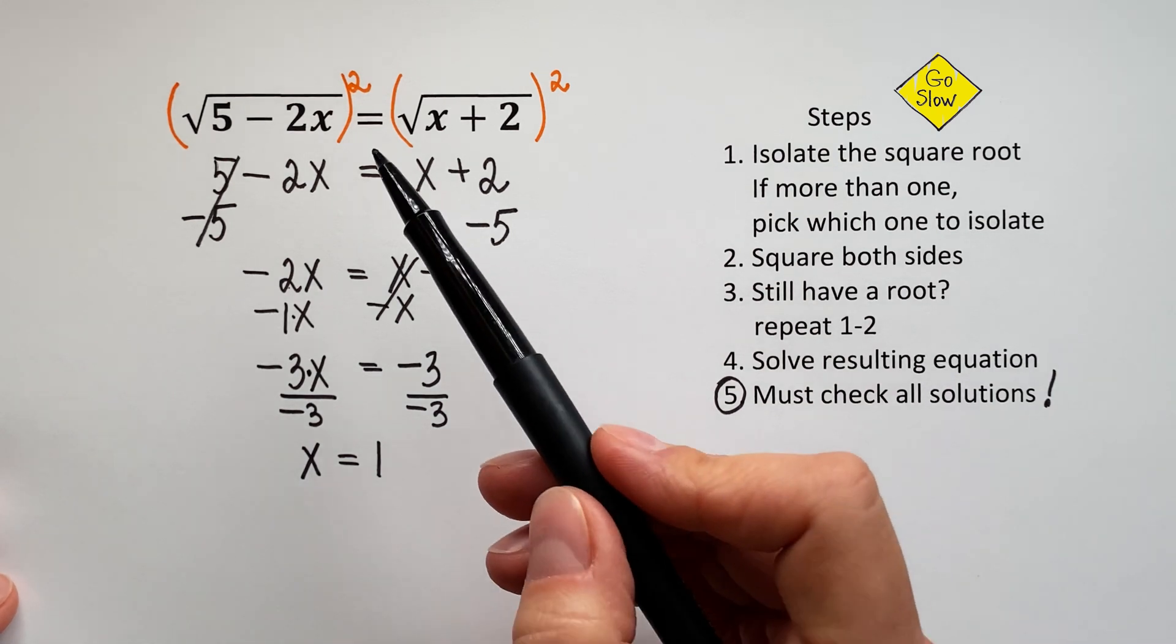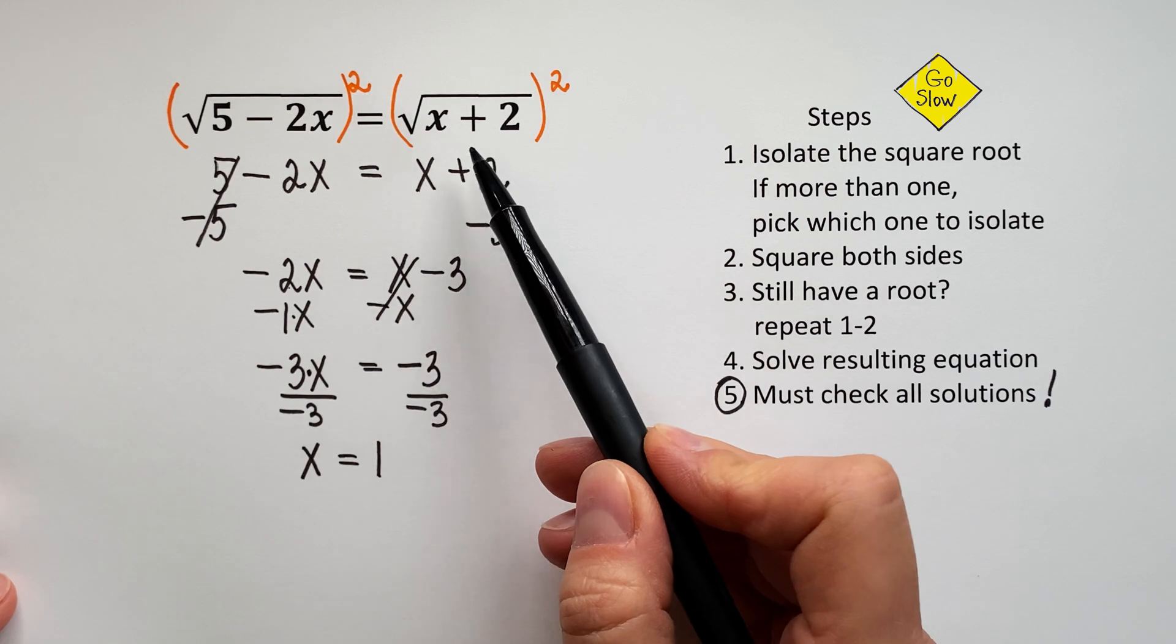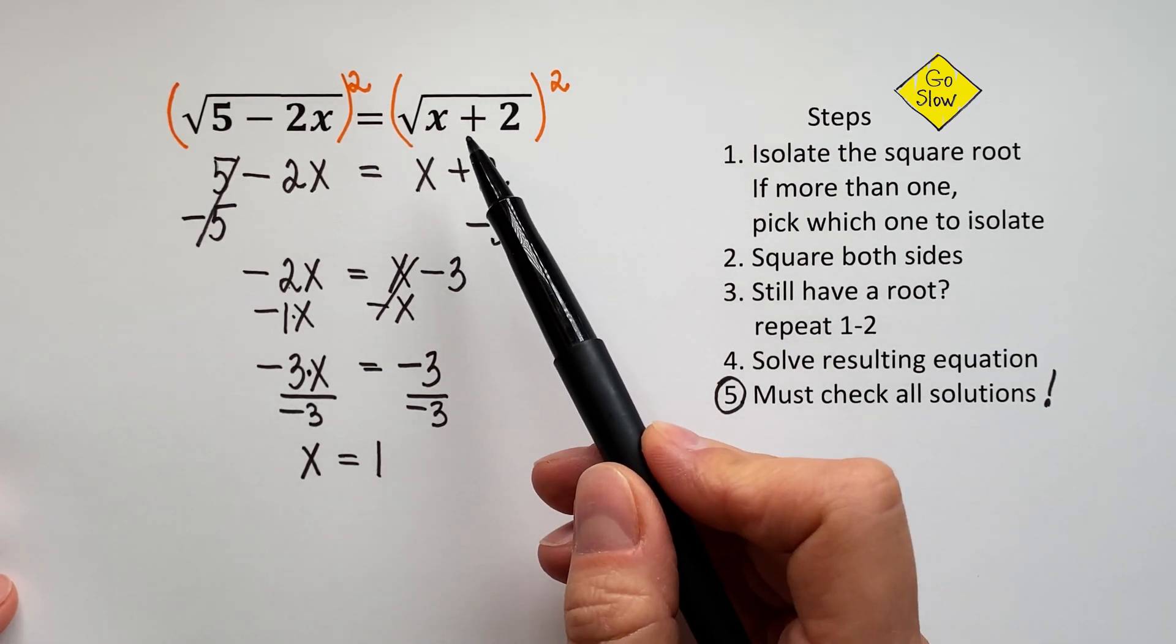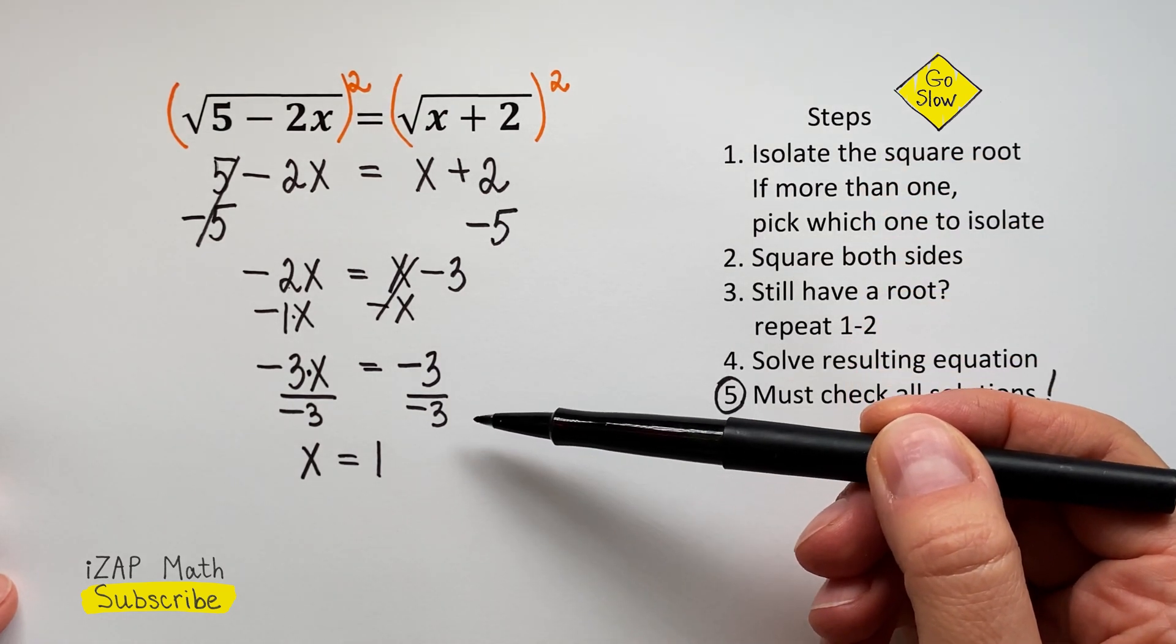Because the method of squaring both sides may produce extraneous solutions, may produce solutions that do not check out. Even if you didn't do anything wrong, we must check solutions.